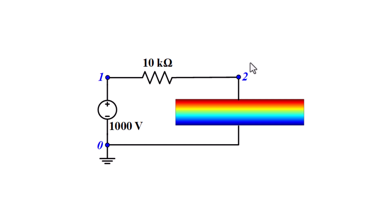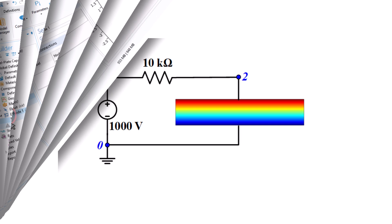Using these node numbers you can define where the circuit elements are placed. The voltage source is placed between node zero and node one, the resistor between node one and two, and the capacitor — which is the electrostatics physics — is placed between node two and zero. Let's define this circuit in the software.